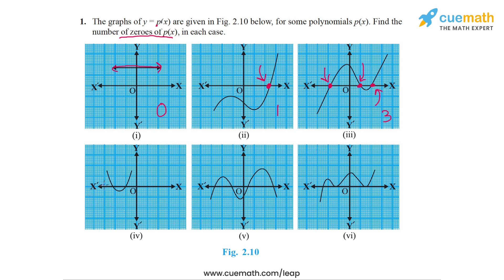In the fourth part, the graph crosses the x-axis here, so that's zero 1, and it crosses the x-axis here, so that's zero 2. So this polynomial has two zeros.